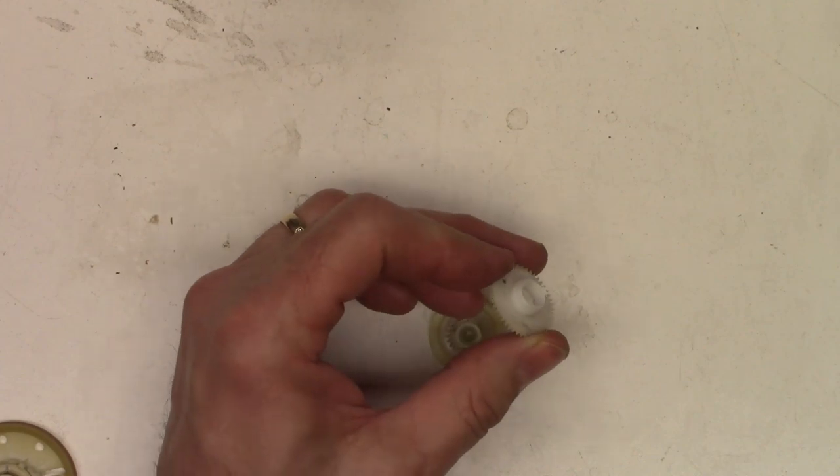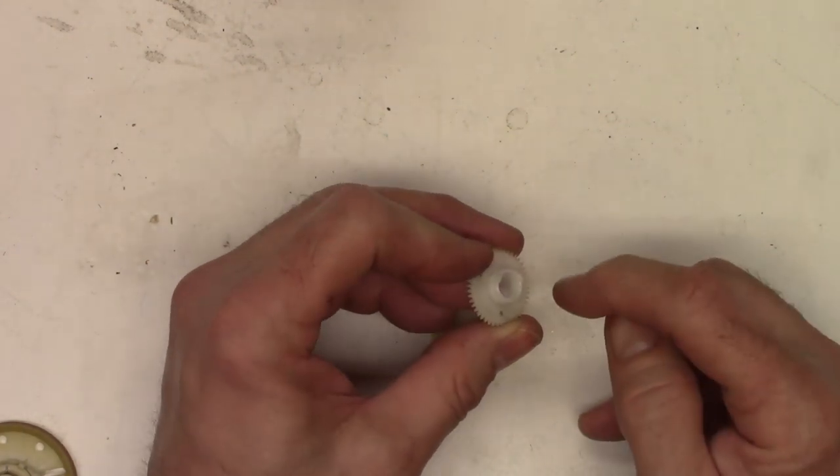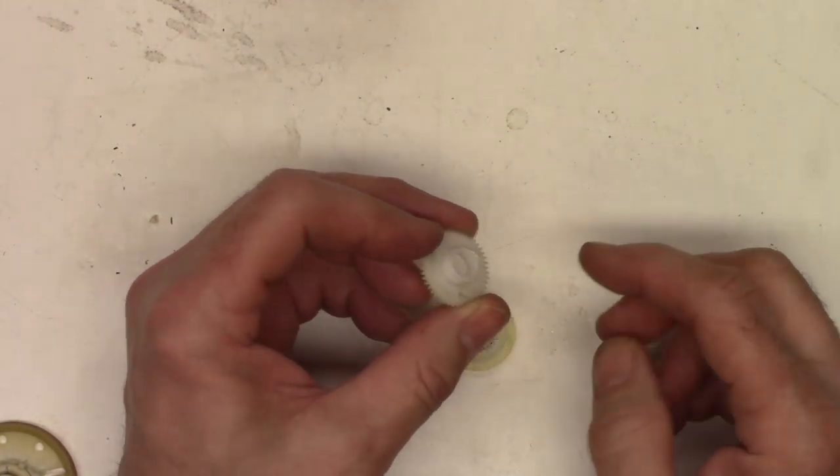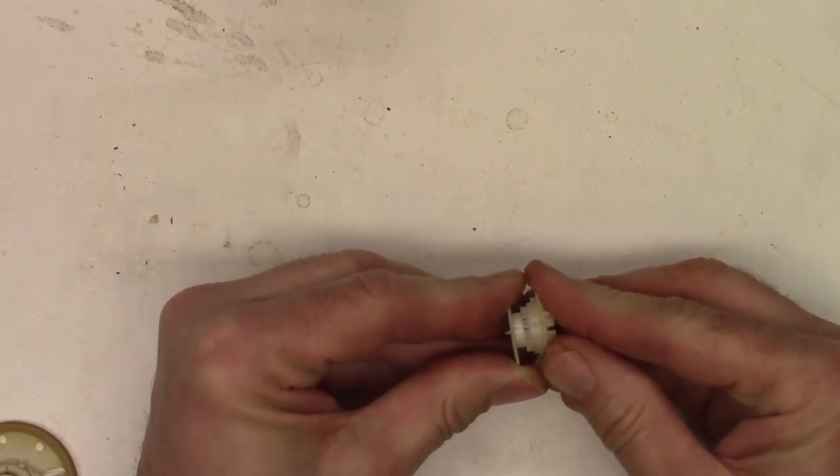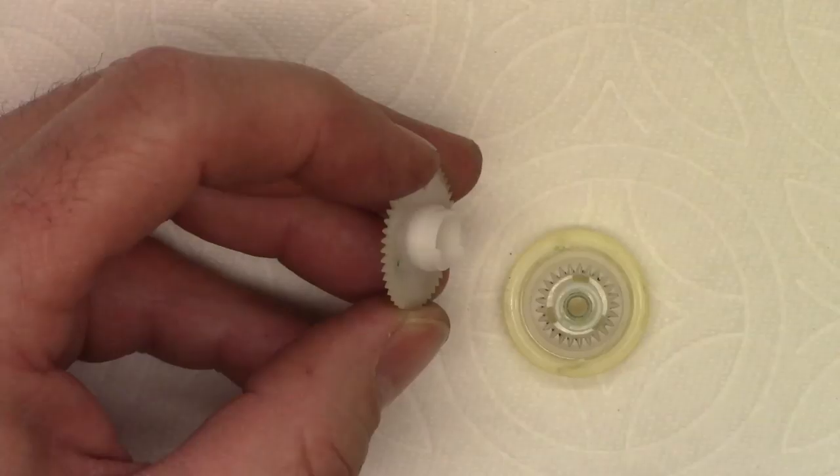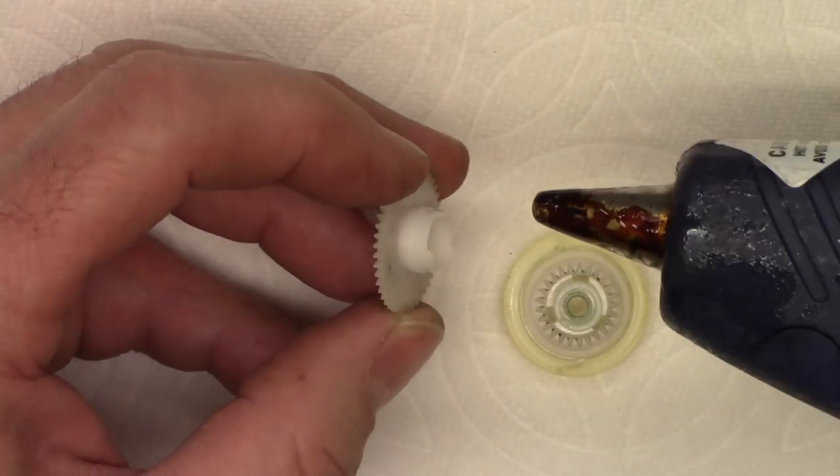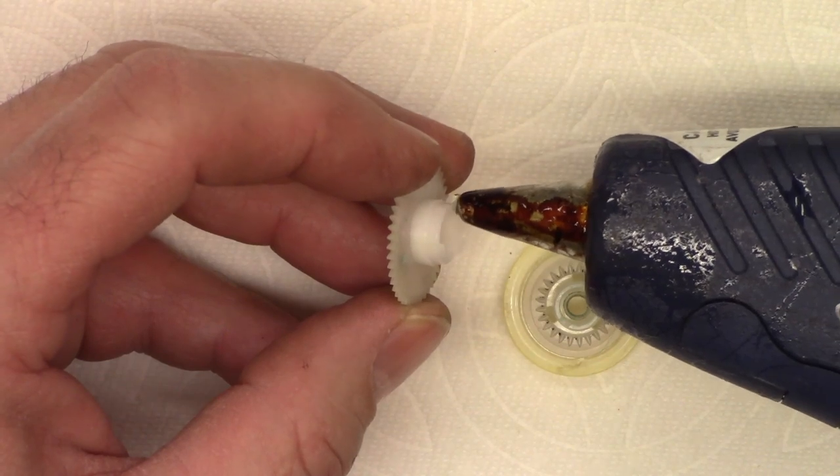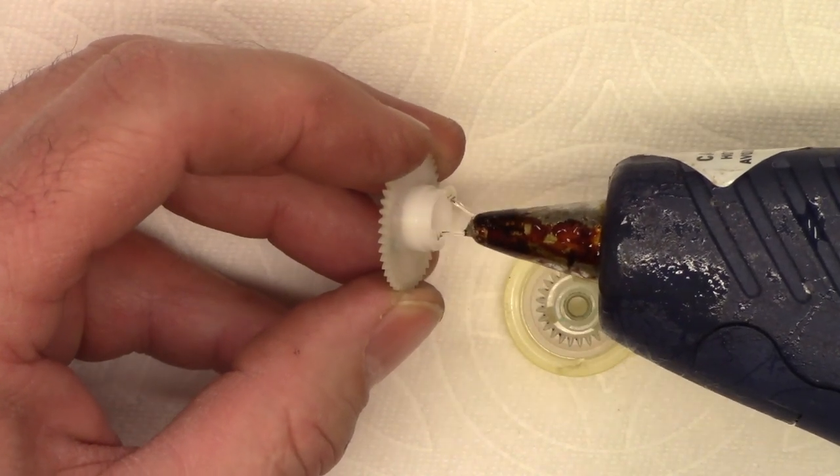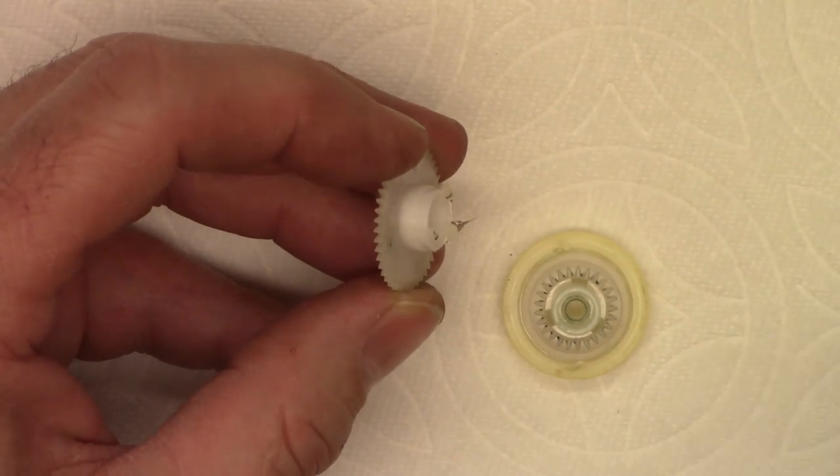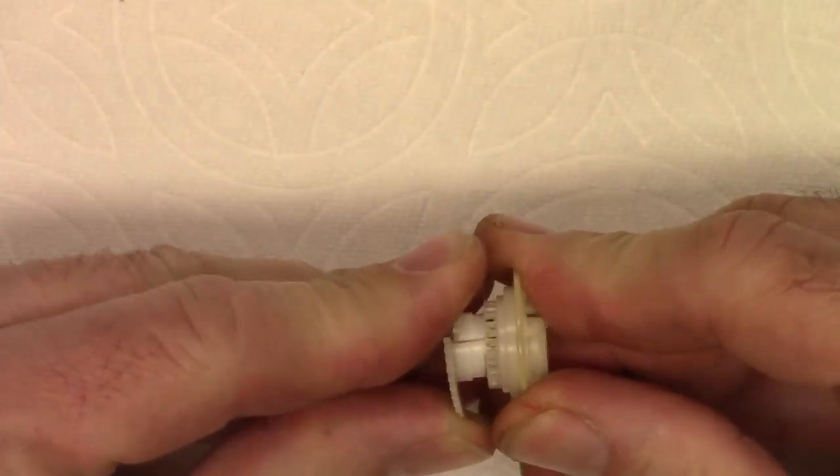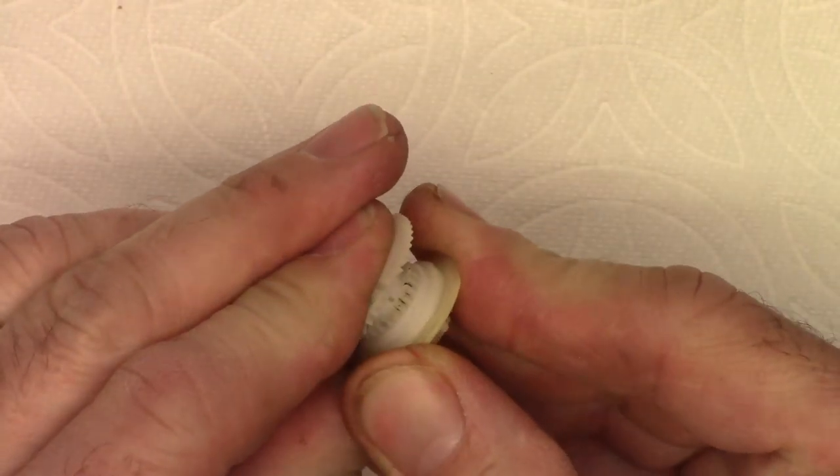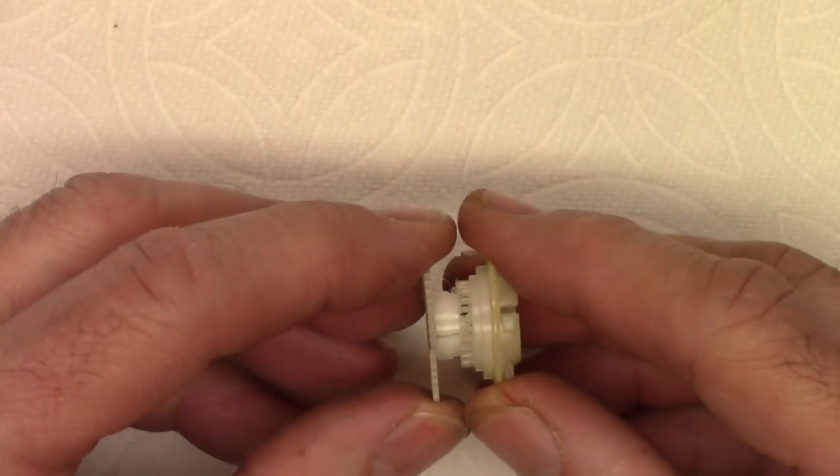And now once the hot glue gun gets completely up to temperature, we'll just put a little droplet on all three tabs. And very quickly before it cools, reassemble it just like that. Alright, my hot glue gun is ready. Hopefully you'll be able to see this okay. So really quickly I'm just going to put three little droplets right there. And then very quickly assemble it back together. And I missed the mark.